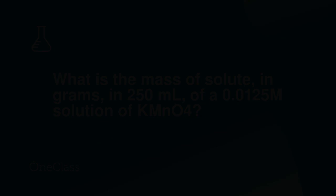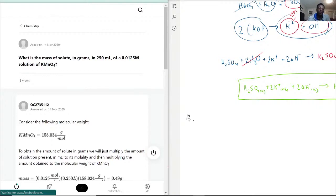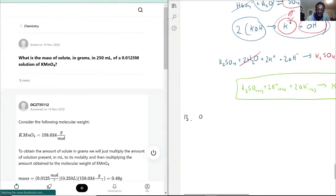For this one we have what is the mass of solute in grams in 250 mL of a 0.0125 molar solution of KMnO4. So we have 0.0125 molar solution and we have 250 mL of it and they want to know what is the mass of KMnO4, and this would be potassium permanganate.